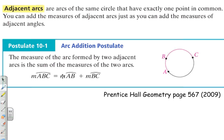It is equal to the measure of arc AB, this smaller minor arc, plus the measure of arc BC, this other smaller minor arc.